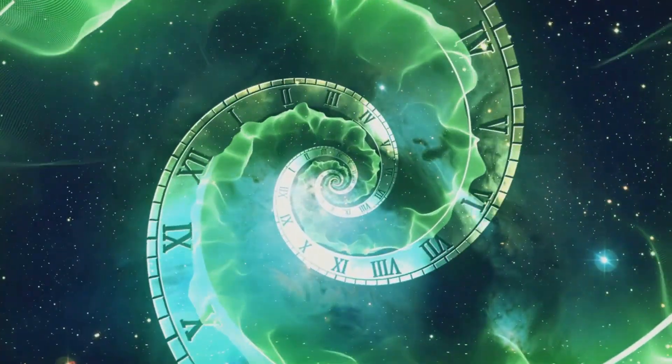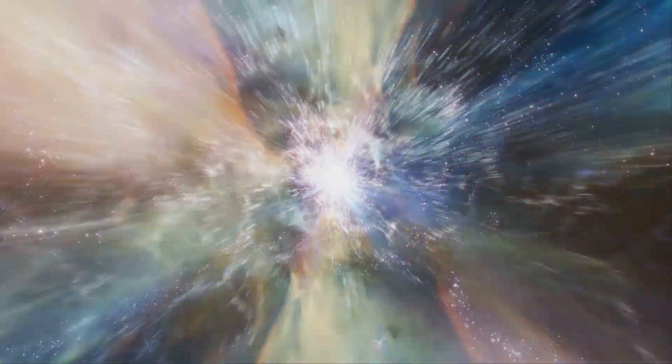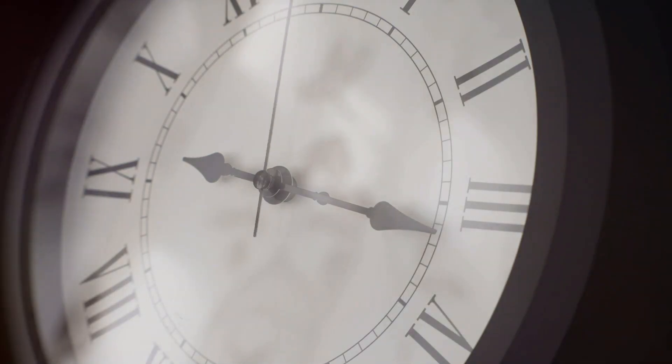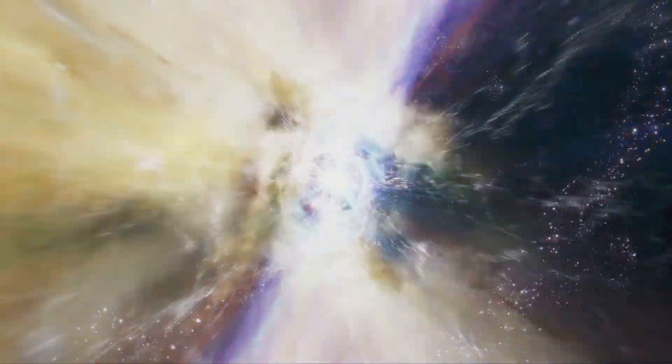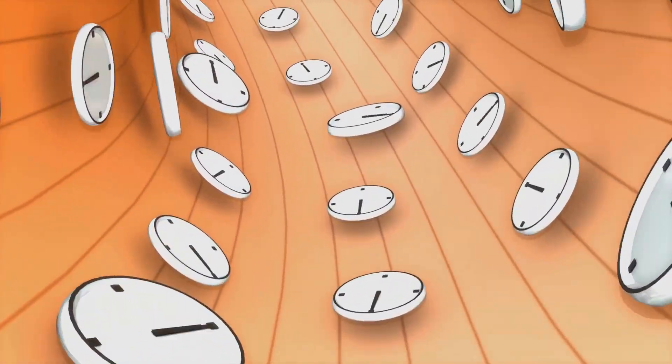The concept of relativity of simultaneity is crucial to understanding the block universe theory. Einstein's theory of relativity showed us that the idea of now isn't as simple as we thought. What's happening now for you might be in the past or future for someone else, depending on their position and motion relative to you. This means that there's no universal present moment that everyone in the universe shares. In the block universe, there's no special status given to the present moment. If all moments in time exist equally in this four-dimensional block, then the moment you call now isn't fundamentally different from any other moment. Your experience of the present is just your consciousness moving along your timeline in the block universe. From this perspective, the past and future are just as real as the present. They're simply at different coordinates in the time dimension.